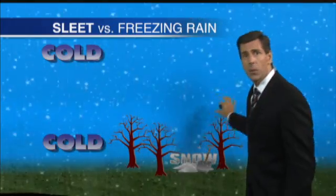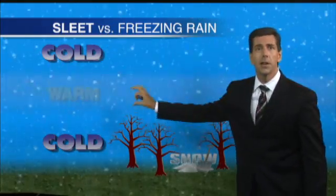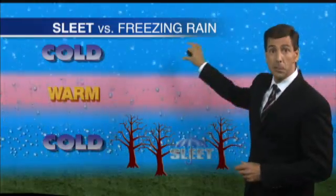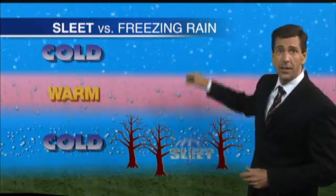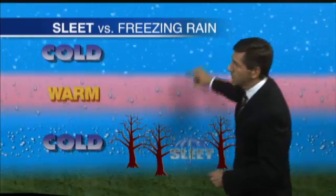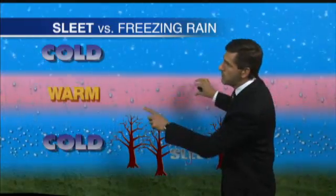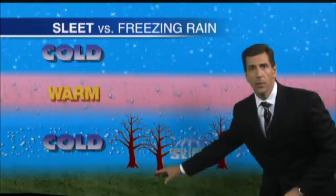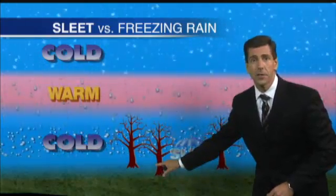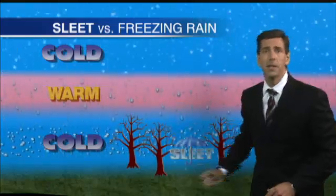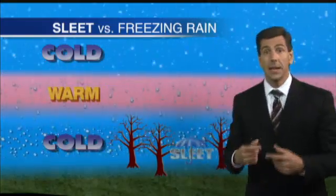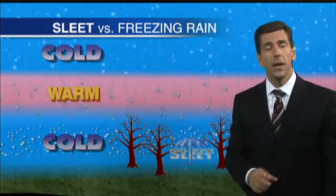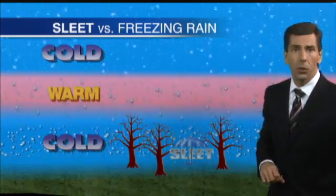We get sleet when a wedge of warm air comes in through the mid-levels of the atmosphere, deep enough so that precipitation forms as snow and then falls into that warm layer and melts into rain. But below that warm layer, there's a sufficiently deep layer of sub-freezing air, so that rain then refreezes into ice pellets. That is sleet, which is very different from freezing rain.